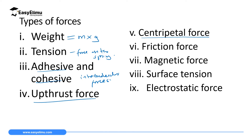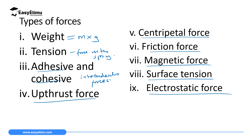We also have frictional force, which opposes motion and has many advantages and few disadvantages. Then there is magnetic force — the force between two magnets or poles of a magnet, which is very useful in the production of electricity. We have surface tension force, which makes house flies and mosquitoes float on water. Finally, we have electrostatic force, which produces a cracking sound or flashes of light when you remove a nylon cloth.